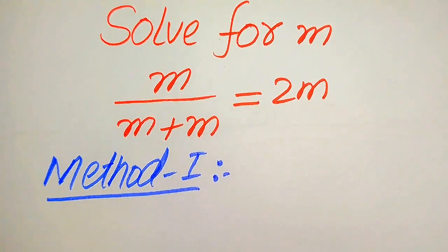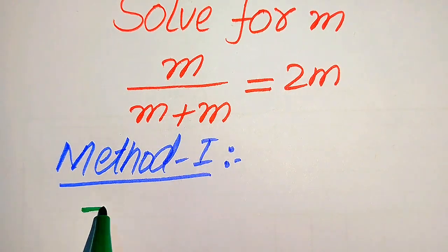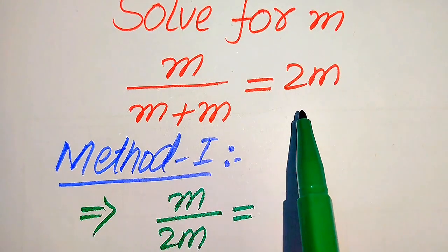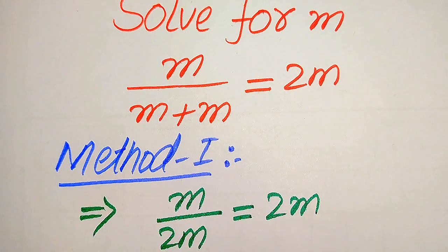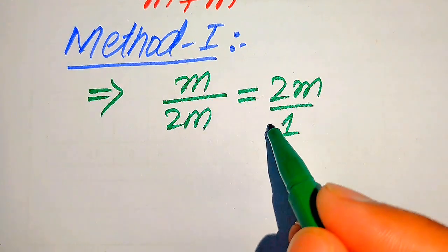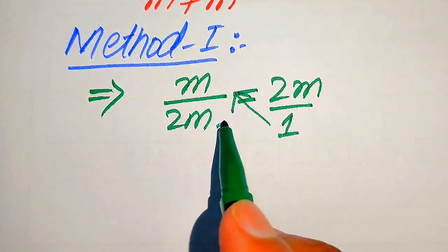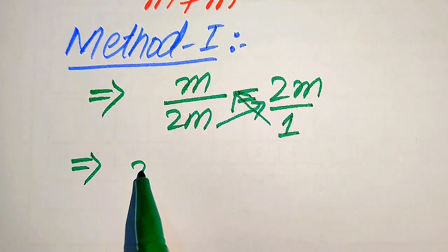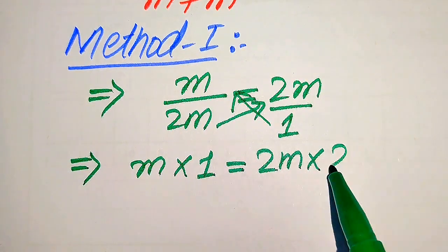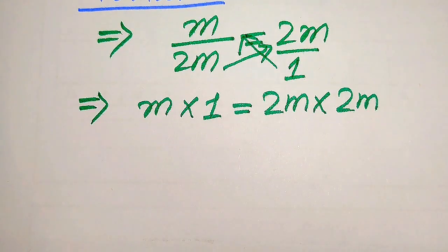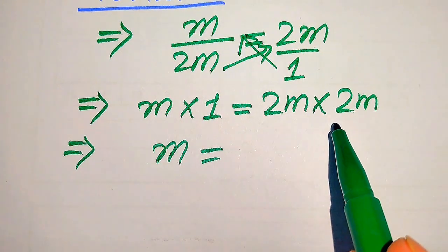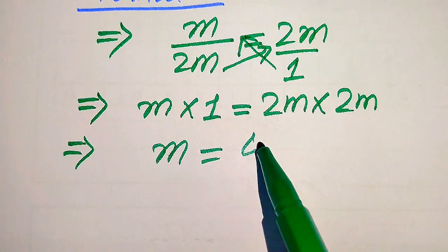In the first method, we see that the denominator terms are m plus m, so it will be written as m divided by 2 times of m, and on the right hand side we have 2m. The denominator of the right hand side term is 1, so we cross multiply: we multiply 1 with m and we multiply 2 with 2m. After cross multiplication we get m times 1 equals 2m multiplied by 2m, which gives us m equals 4m squared.